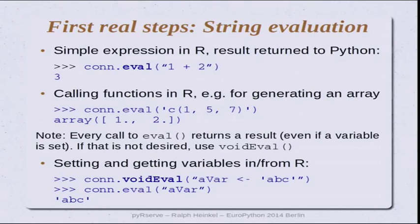Sometimes you don't always want to return the result back from R. When you assign a very complex data structure to a variable on the R side, you don't want it serialized, passed through the network, and deserialized on the Python side. For that case, there's a variant of the eval command called void_eval, which just executes the expression on the R side and doesn't return anything to Python. If you still want to see the value of the variable, you just use the eval command.